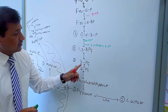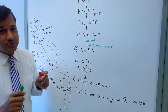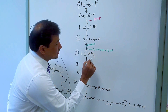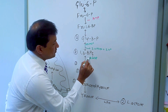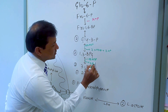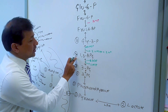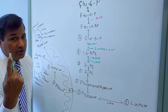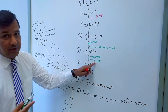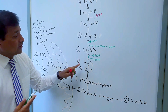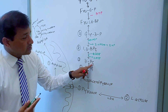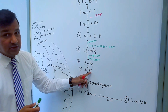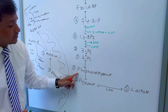In the next step, 1,3-bisphosphoglycerate is converted to 3-phosphoglycerate by phosphoglycerate kinase. There will be production of two ATPs — two ADPs go in and two ATPs come out — because we are considering two molecules of 1,3-bisphosphoglycerate making two molecules of 3-phosphoglycerate. This is substrate-level phosphorylation.